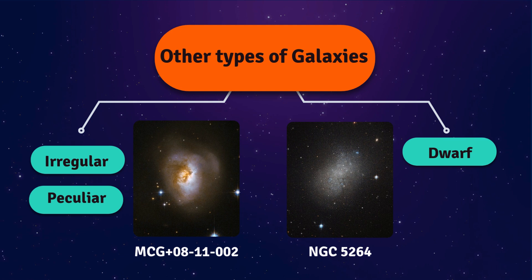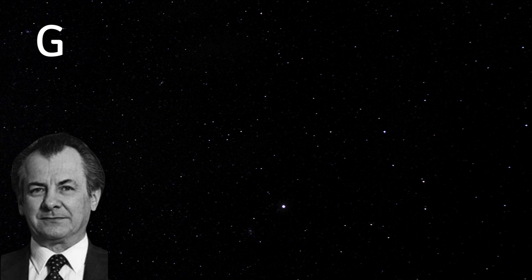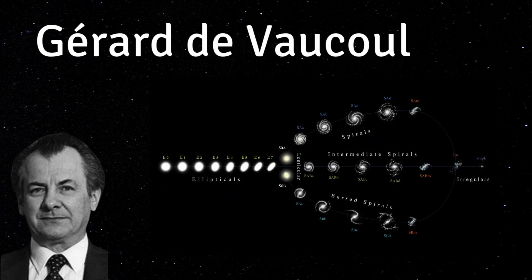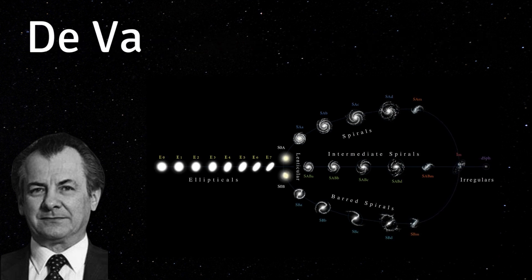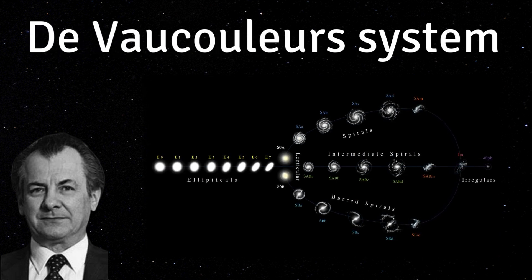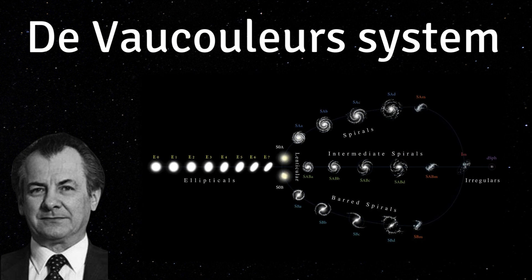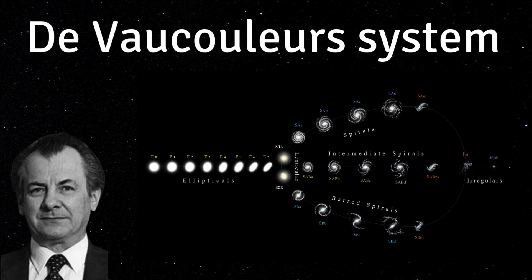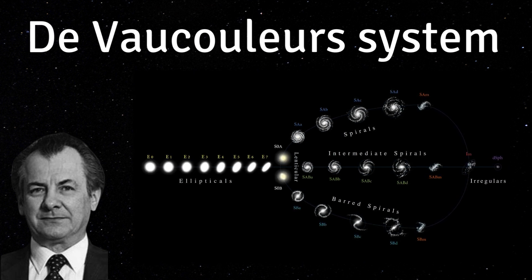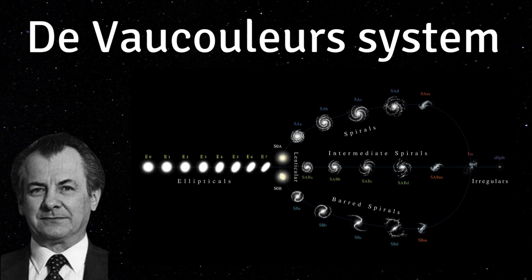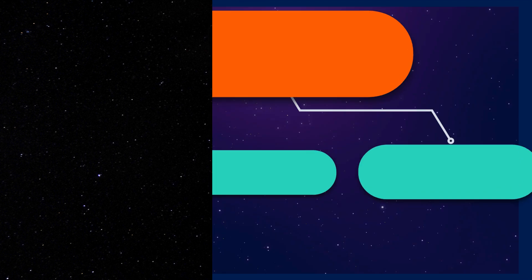To improve on Hubble's system, scientists have created more classification systems. One example is the system created by Gérard de Vaucouleurs in 1959, called the de Vaucouleurs system, which builds on Hubble's Tuning Fork but adds more details about galaxies' shapes and features. Instead of three main types, it introduces subcategories for galaxies, providing a more complete picture of their structure.